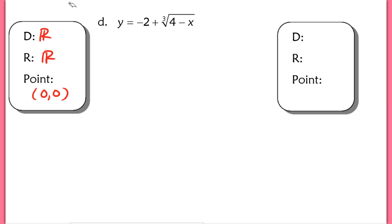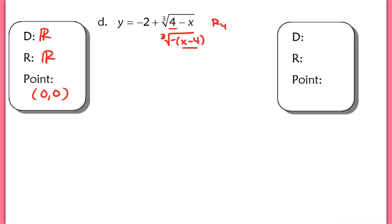For example d, try this one on your own. Note that it will shift the graph right 4 units rather than left 4, because if you factor out the negative, you get the opposite of (x minus 4), which shows it shifts right 4. Go ahead and graph this based on the last example and check with the key.